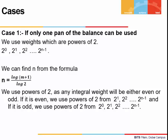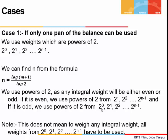Using powers of 2 is ideal because any integral weight we are weighing will be either even or odd. If it is even, we take weights 2 to the power 1, 2 to the power 2, and so on up to 2 to the power n minus 1 — all of them are even. If the weight is odd, we include 2 to the power 0. When we are given any weight to weigh using only one pan, we do not have to use all the powers of 2 — we can pick and choose the weights needed for our specific case.